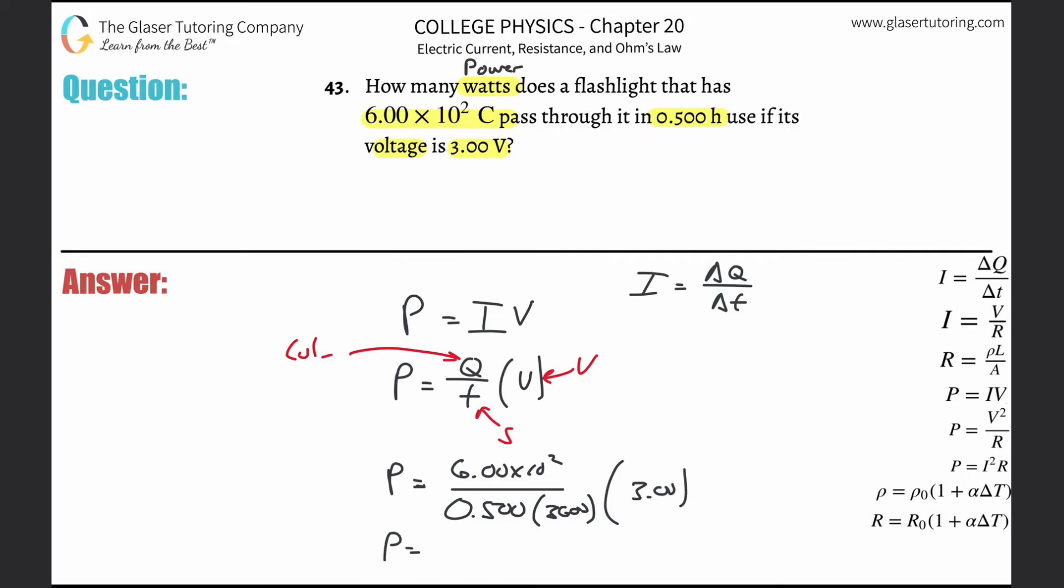Take out that handy dandy calculator, six times 10 to the two divided by parentheses 0.5 times 3,600, close those parentheses and then multiply it by three. One. One watt. How many sig figs? I guess put three. So do 1.00 and you're good to go.